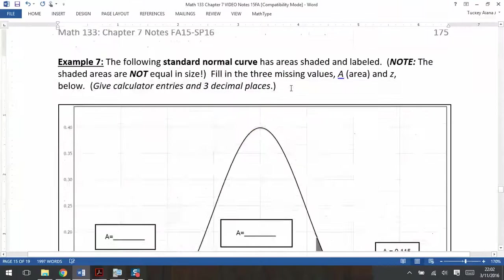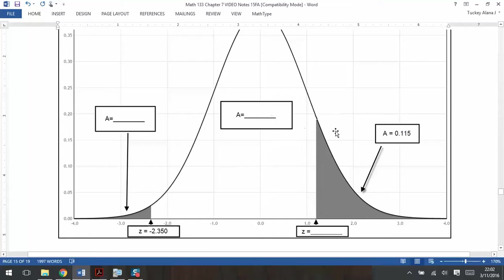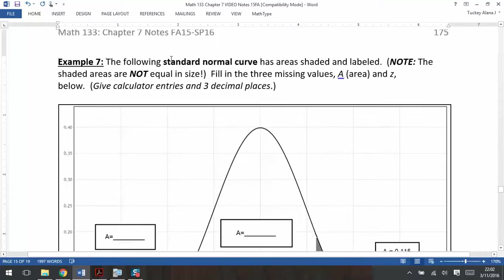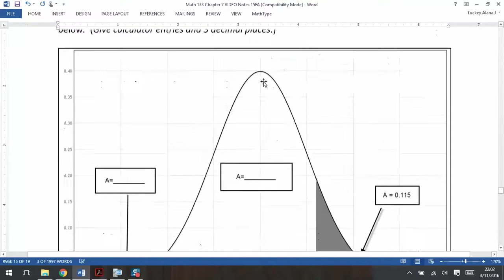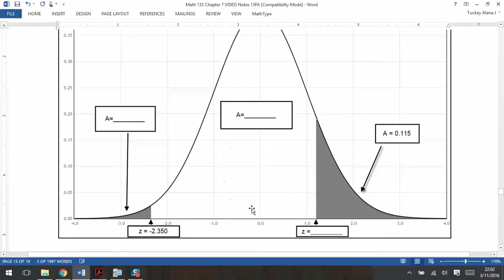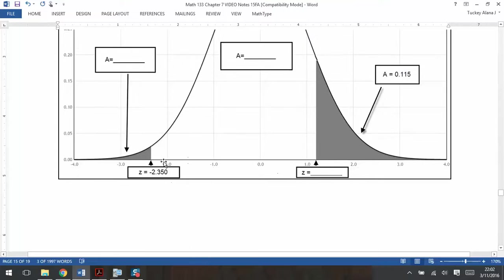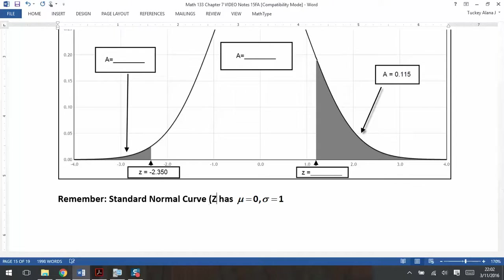When we look at this particular curve, this is the standard normal curve. It says so in the instructions, but you could have figured that out by looking at it because it has a center of zero, inflection points at one and negative one, which is where the standard deviation falls. And more obviously, there's z written on the bottom axis. The z-curve by definition is the standard normal curve. So the z-curve has a mean of zero and a standard deviation of one, always, never changes for the z-curve.